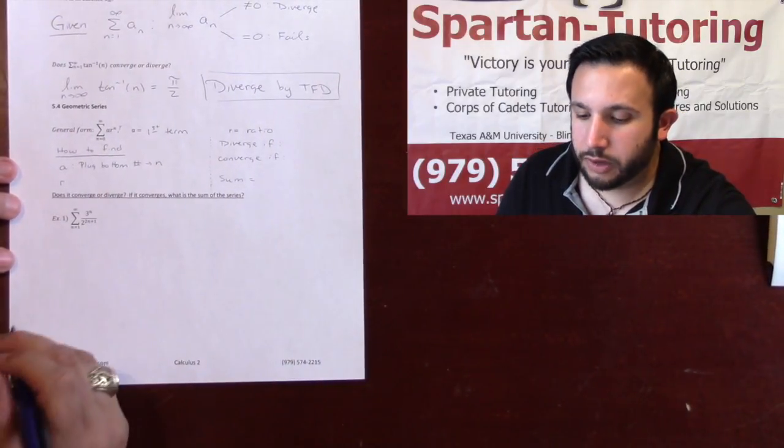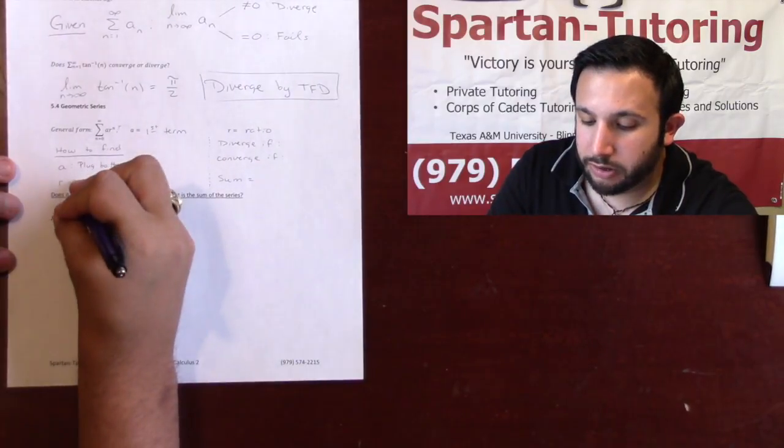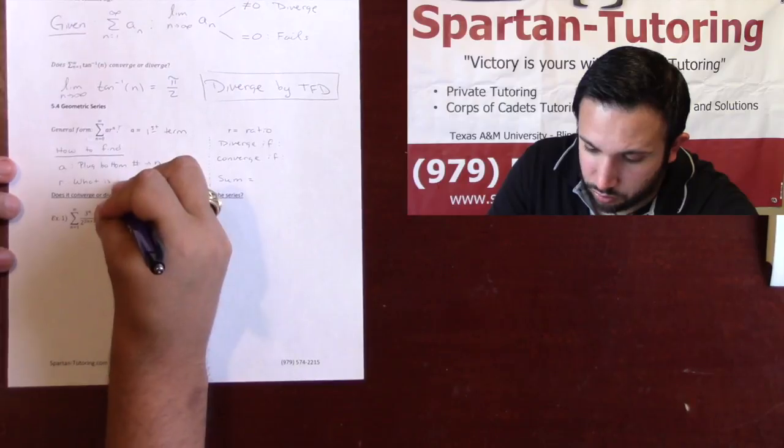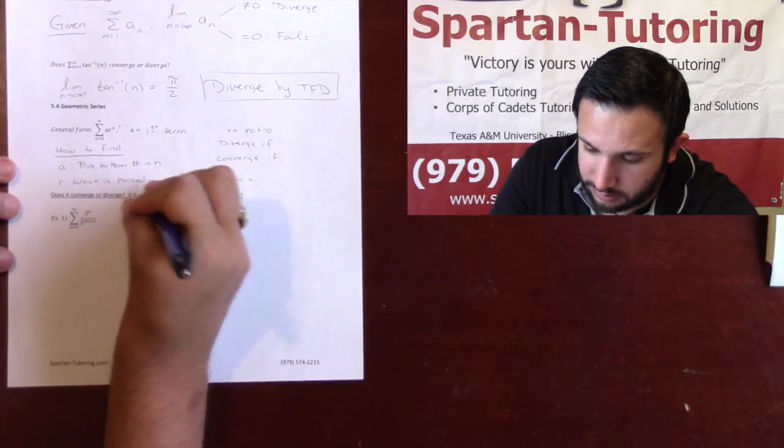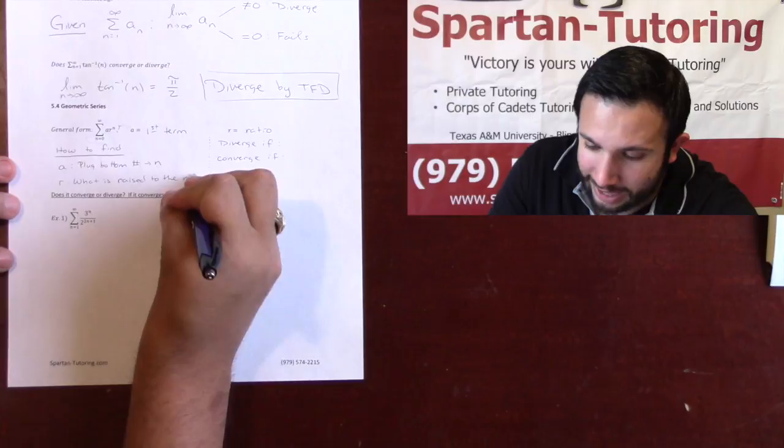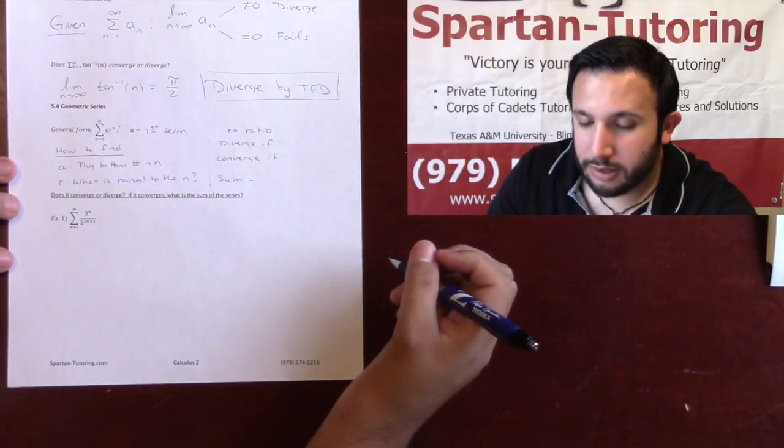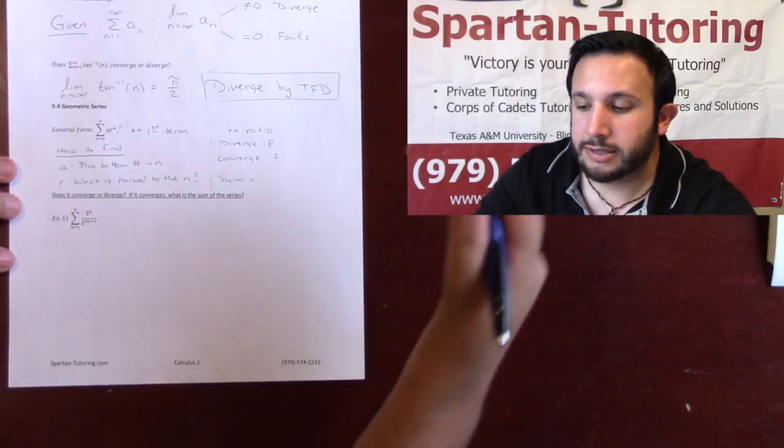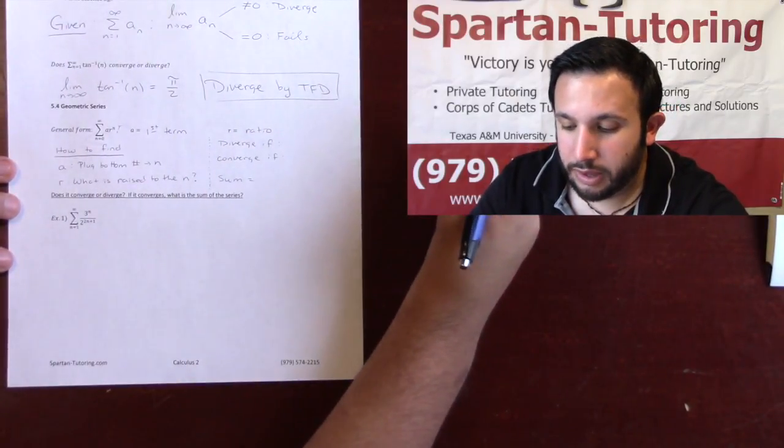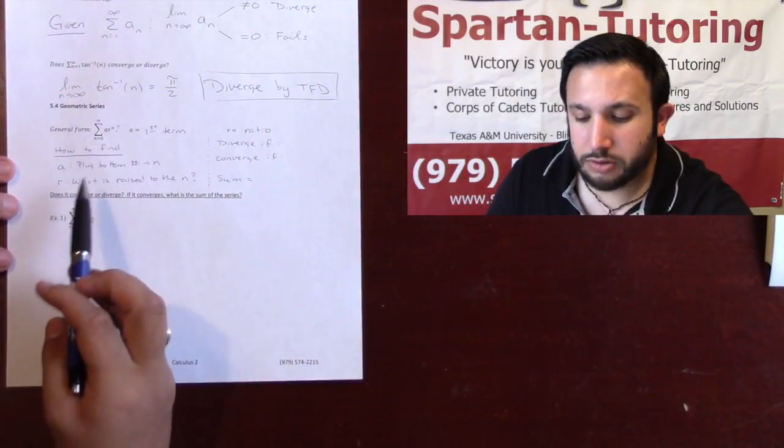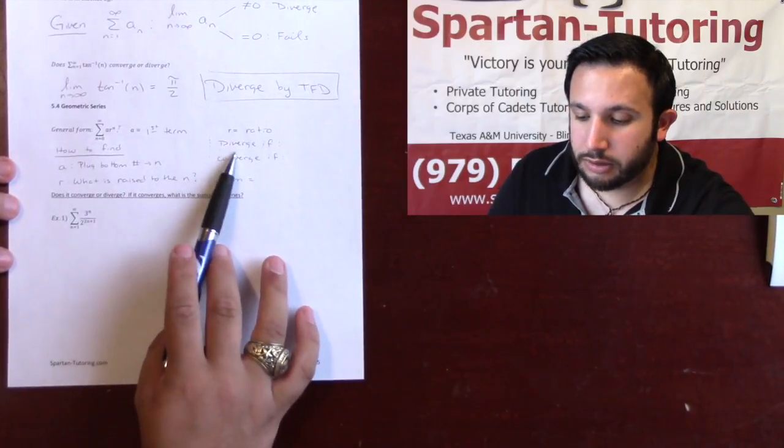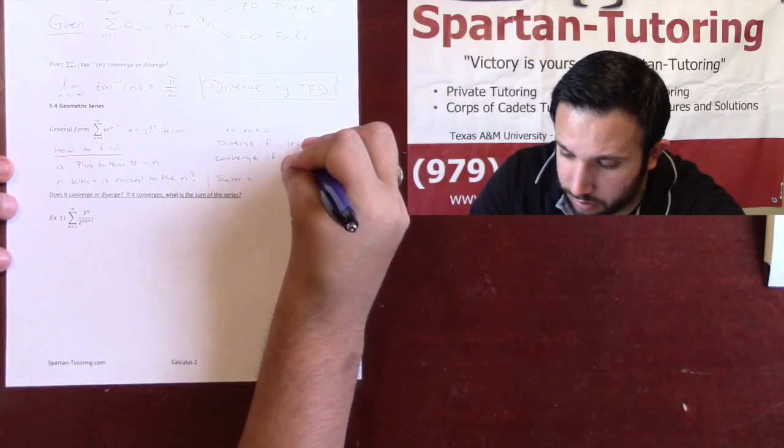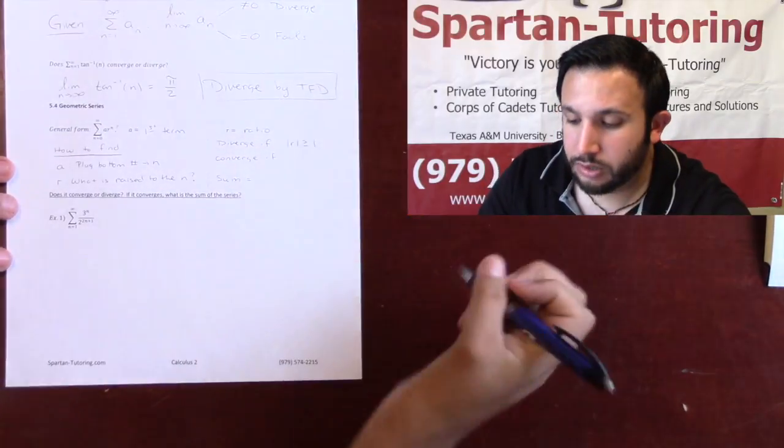And r, you need to ask yourself a question. What r is going to be, you're going to ask yourself, what is raised to the n? Okay, not to the 2n, not to the 3n. What is raised to the n? Now, a geometric series will diverge. It will diverge if the absolute value of that r is greater than or equal to 1.